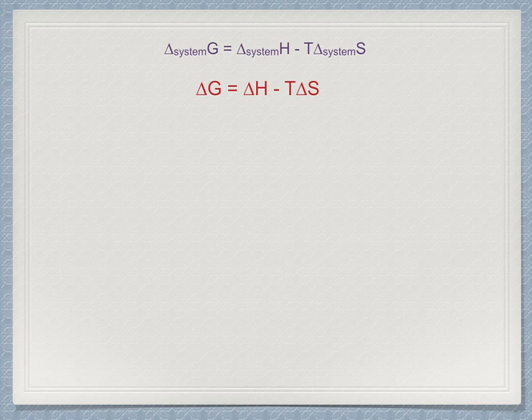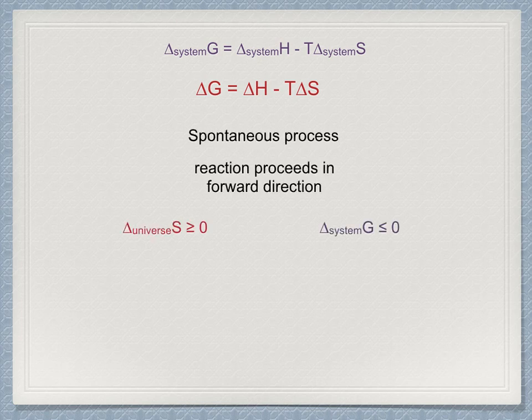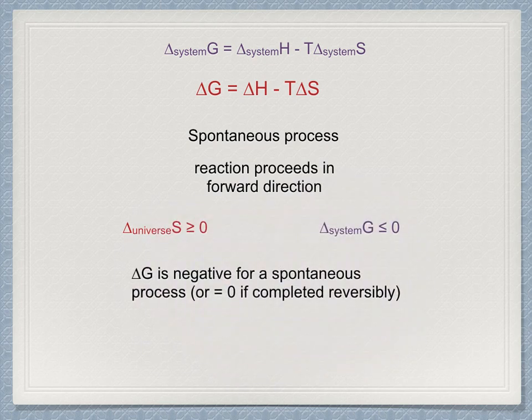Compare how delta G relates to delta S universe, and note the change in sign. A spontaneous process, a reaction that goes in the forward direction as written, must have delta S universe greater than zero, which implies that delta G for the same process must be less than zero. Delta G is negative for a spontaneous process. A spontaneous process is one which decreases a system's Gibbs function.